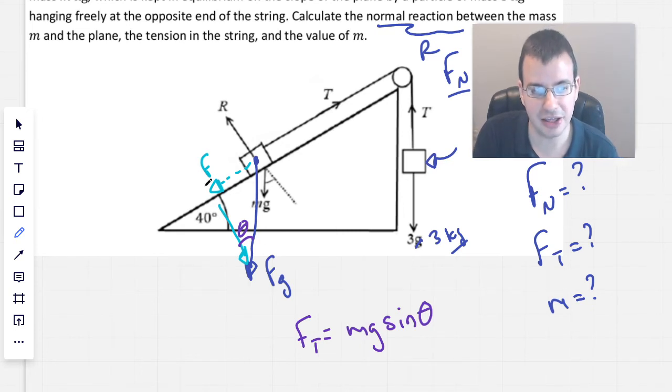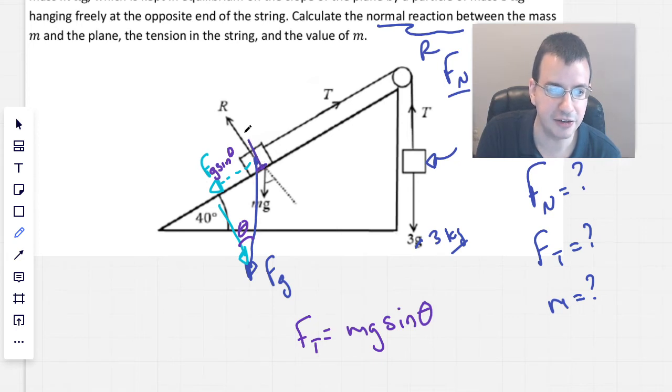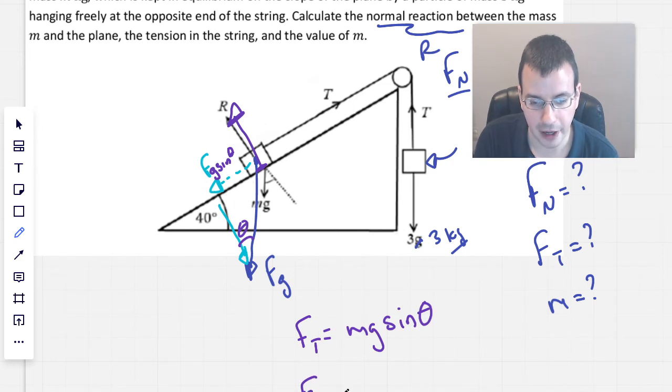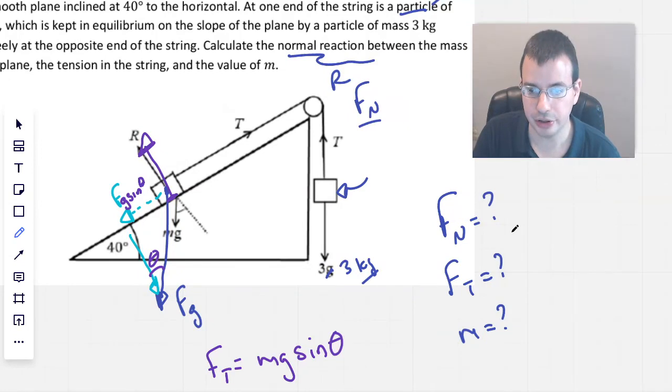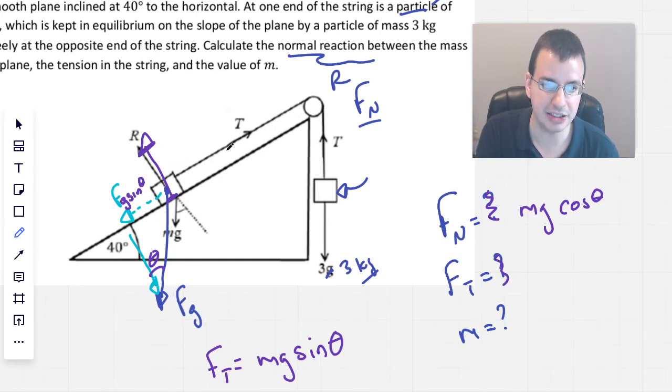So I memorized that this is going to be fg sine of theta, and then this normal component, which I draw from the bottom, which is going to be mg cosine of theta, which makes sense because it's perpendicular to the sine value. So right off the bat, force normal is going to be mg cosine theta, and force tension, which is going to be counteracted by this string right here, so we have a string pulling it up, and that's going to counteract because it's in equilibrium.